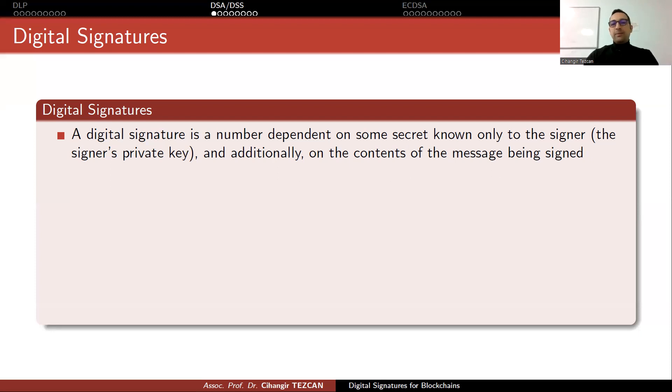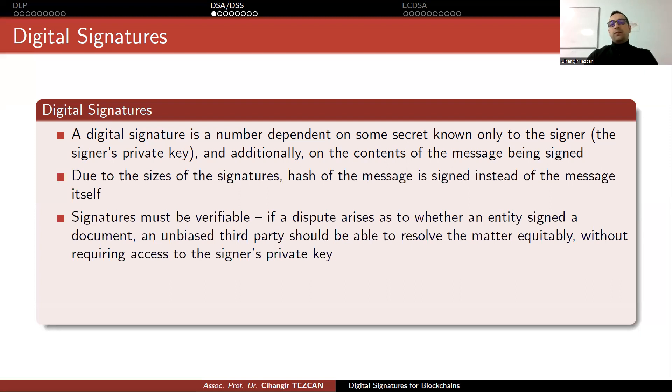Let's define what a digital signature is. A digital signature is a number dependent on some secret known only to the signer, the signer's private key, and additionally on the contents of the message being signed. Due to the sizes of the signatures, the hash of the message is signed instead of the message itself. Signatures must be verifiable. In other words, if a dispute arises as to whether an identity signed a document, an unbiased third party should be able to resolve the matter equitably without requiring access to the signer's private key.